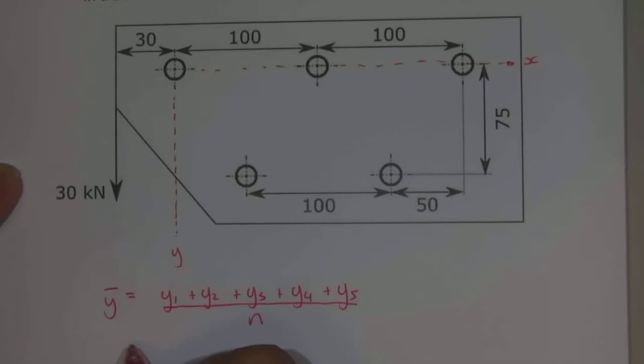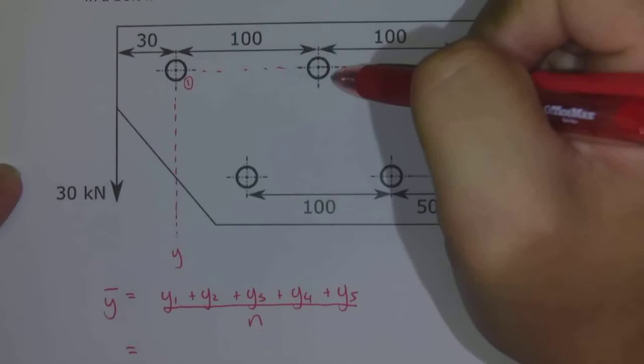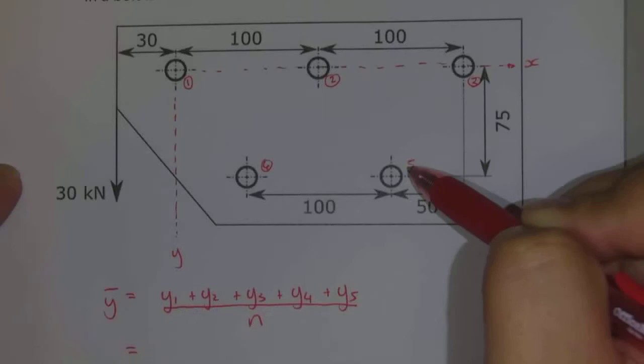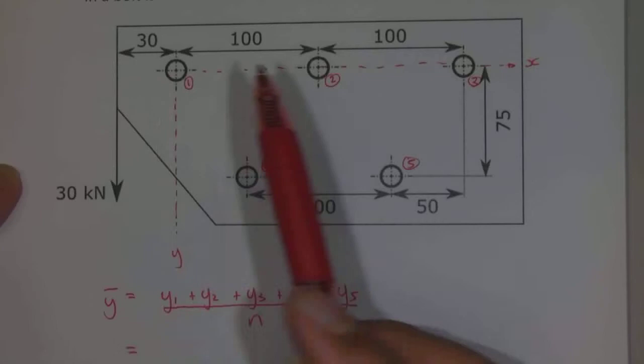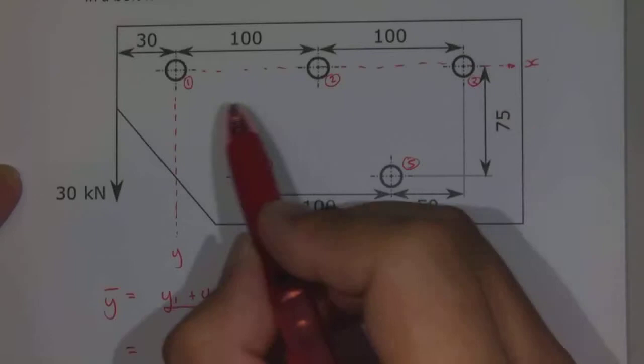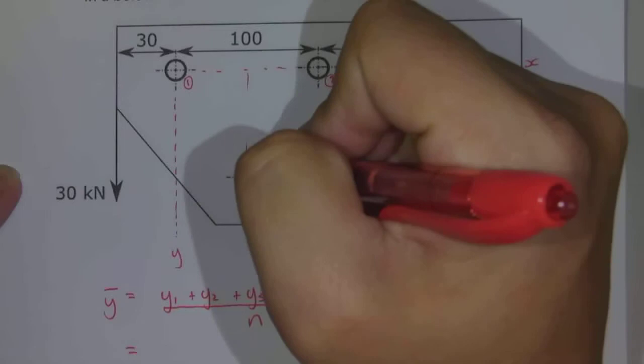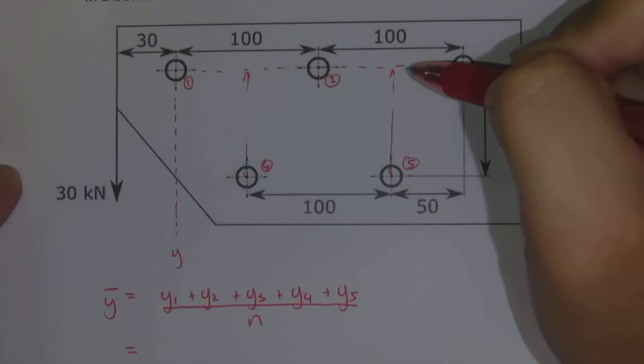So in this case we can name this one bolt number one, number two, number three, four, and five. And so we get zero is the y coordinate for this, the y coordinate for this one is zero, the y coordinate for this one is zero. The y coordinate for this one here is 75, and the y coordinate for this one here is 75.